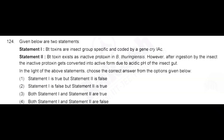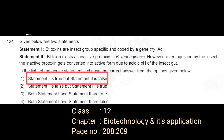Given below two statements. Statement 1: Bt toxins are insect group specific and coded by a gene cry1Ac. Statement 2: Bt toxins exist as inactive protoxin in Bacillus thuringiensis; however, after ingestion by the insect, the inactive protoxin gets converted into active form due to acidic pH of the insect gut. Correct answer: option 1, statement 1 is true but statement 2 is false.